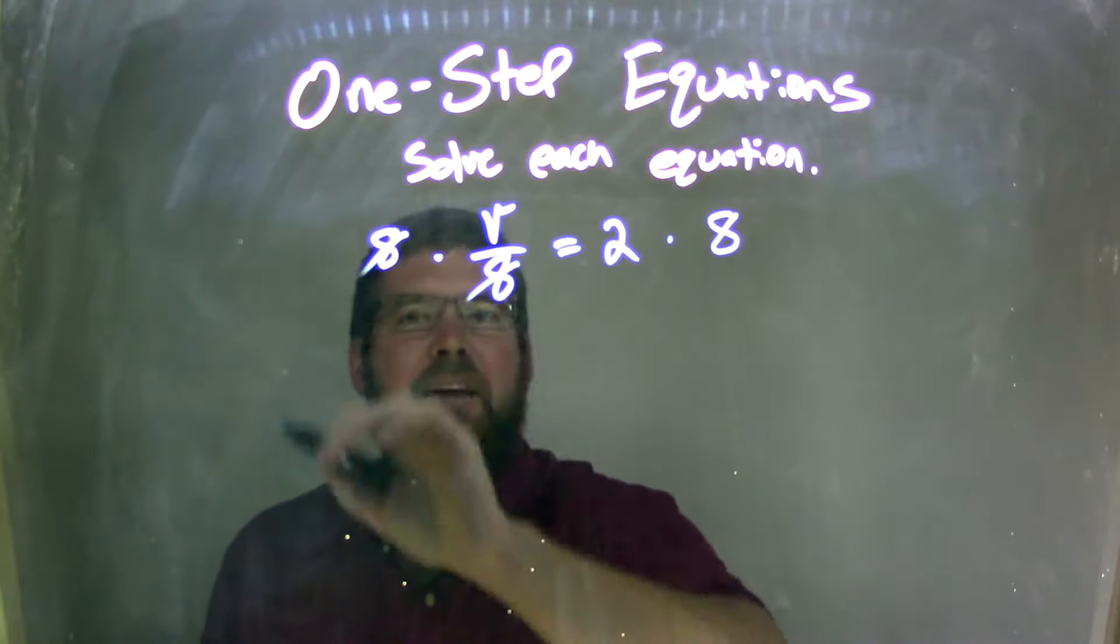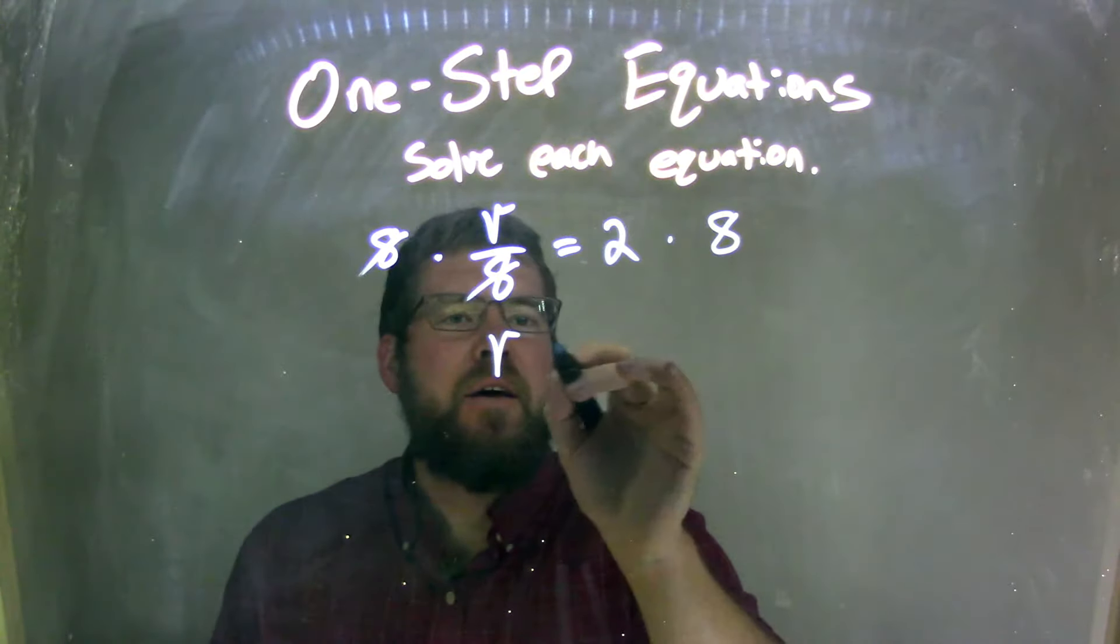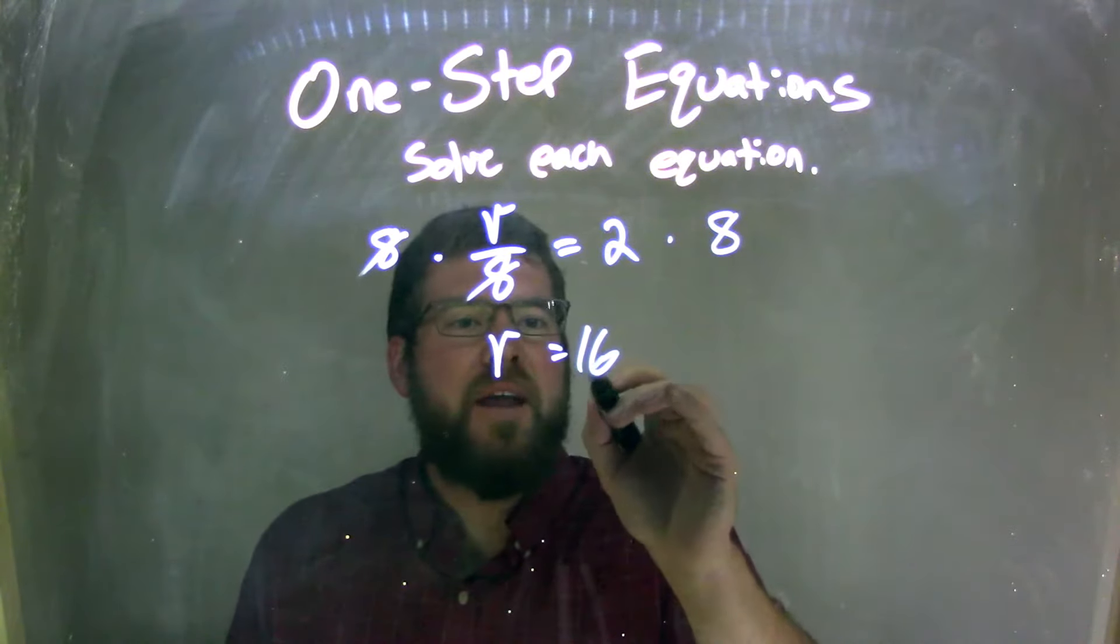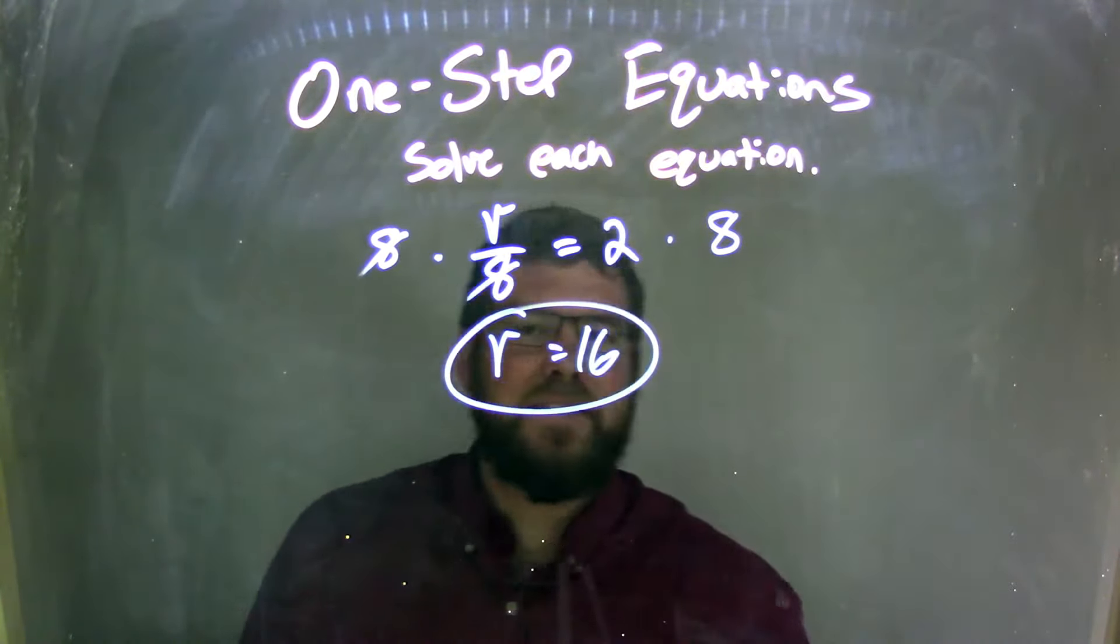What that does is cancel the 8 out here. I'm left with a v. Now I have 2 times 8. 2 times 8 is just 16. Now we're done. We have v by itself, and it's equal to 16.